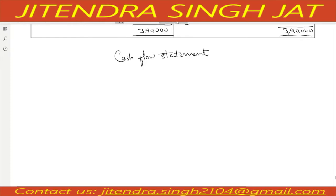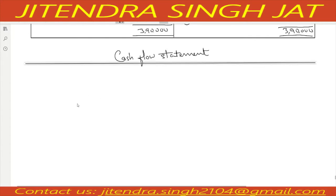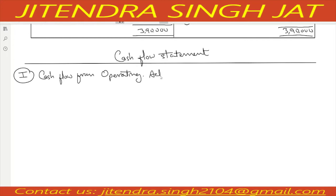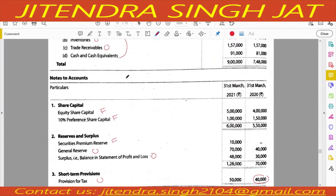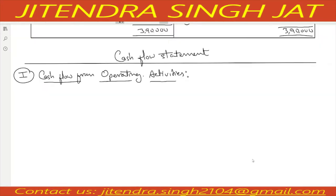Now the cash flow statement. There are three activities - we start with the first activity: cash flow from operating activities. We start with surplus. Surplus is given - earlier it was 30,000, now it is 48,000, so the difference is 18,000. Then we add appropriations: provision for tax of current year which we computed is 45,000. Transfer to reserve - earlier it was 40,000 now it is 70,000, so 30,000.